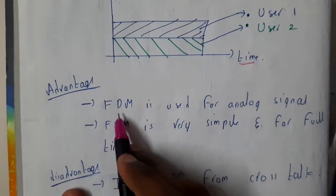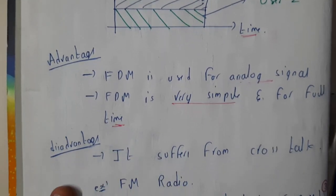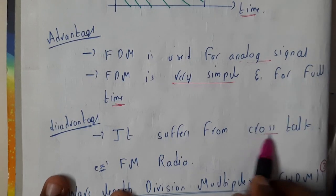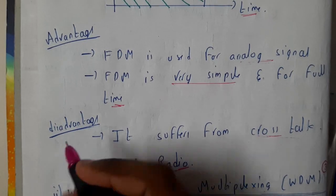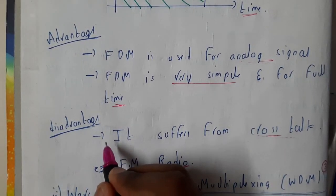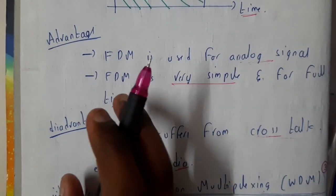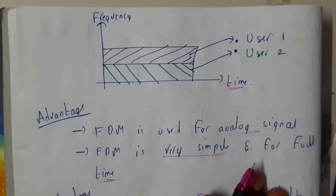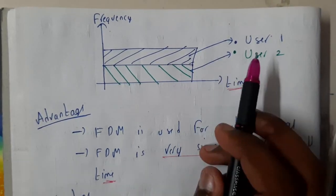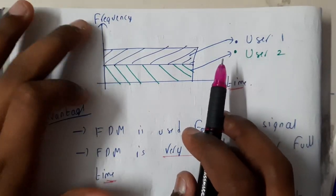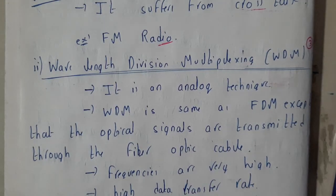The advantages of FDM are that it uses an analog signal and is very simple, running for full time. The disadvantage is that it suffers from crosstalk. A classic example of FDM is FM radio — stations like 99.9 FM or 98.7 FM each have their own allocated frequency. In the next tutorial, we will be going through wavelength division multiplexing. Thank you for watching.